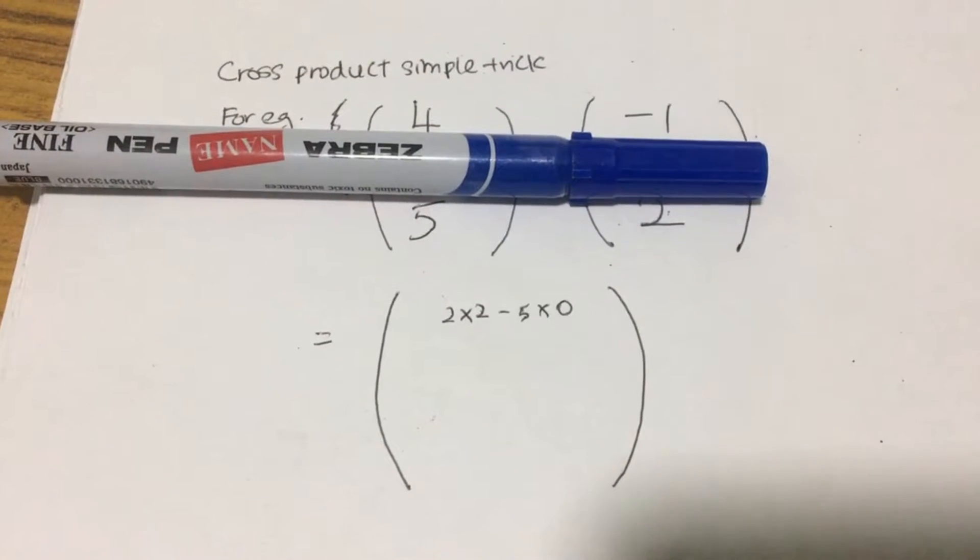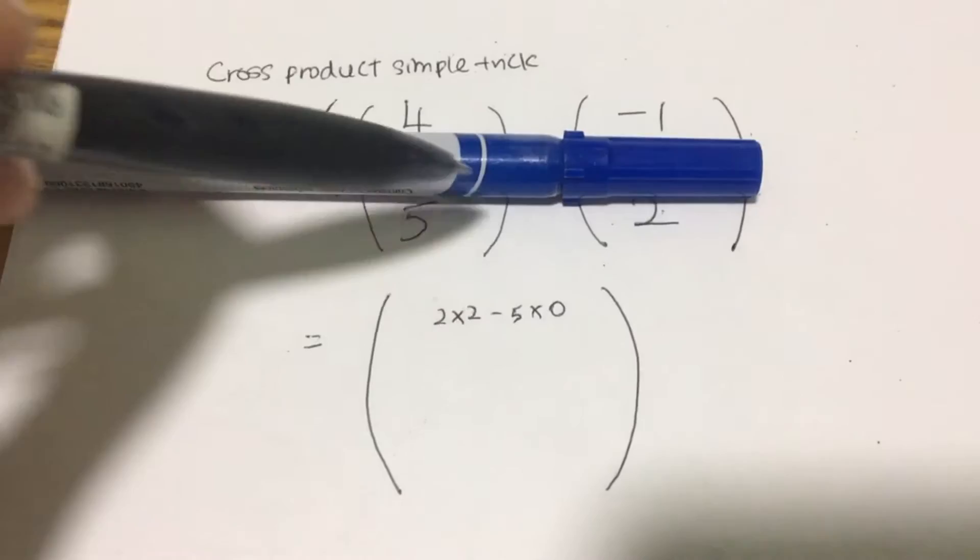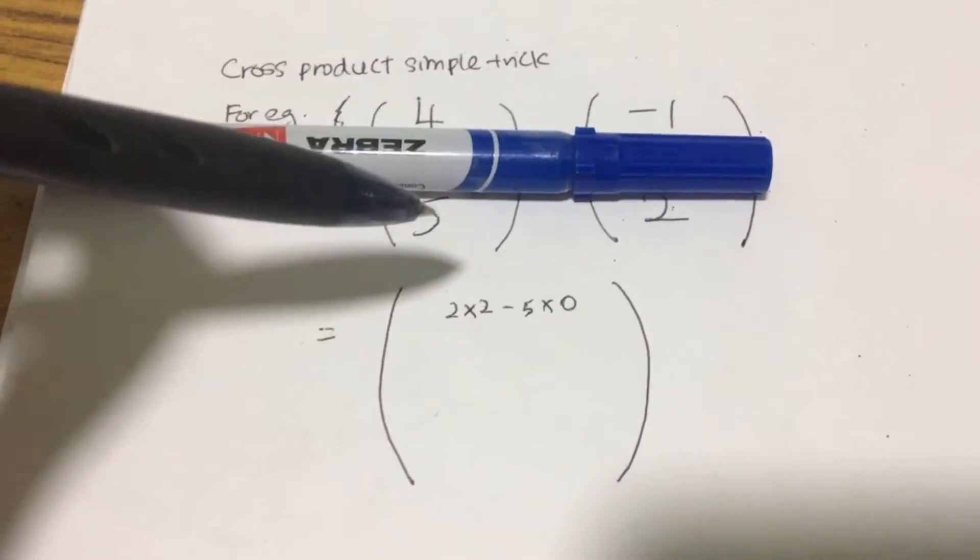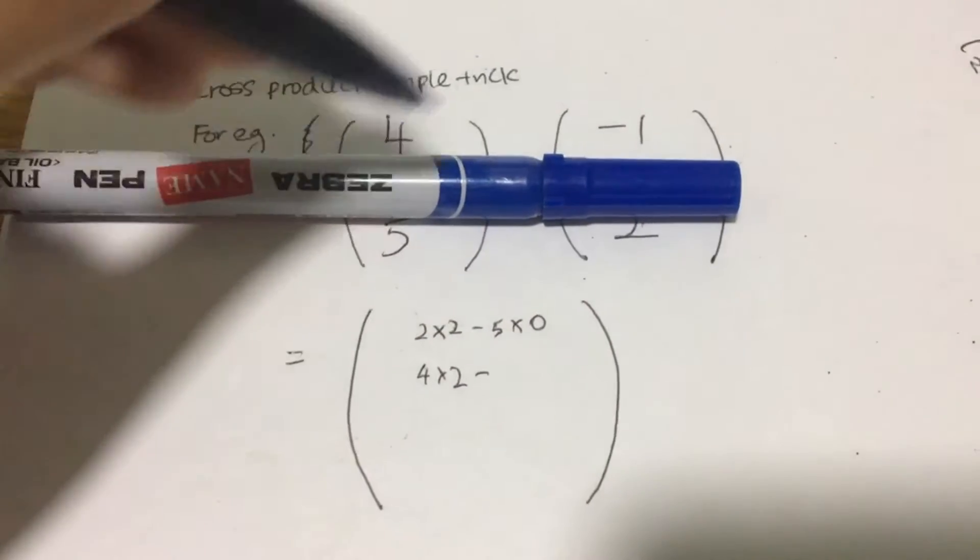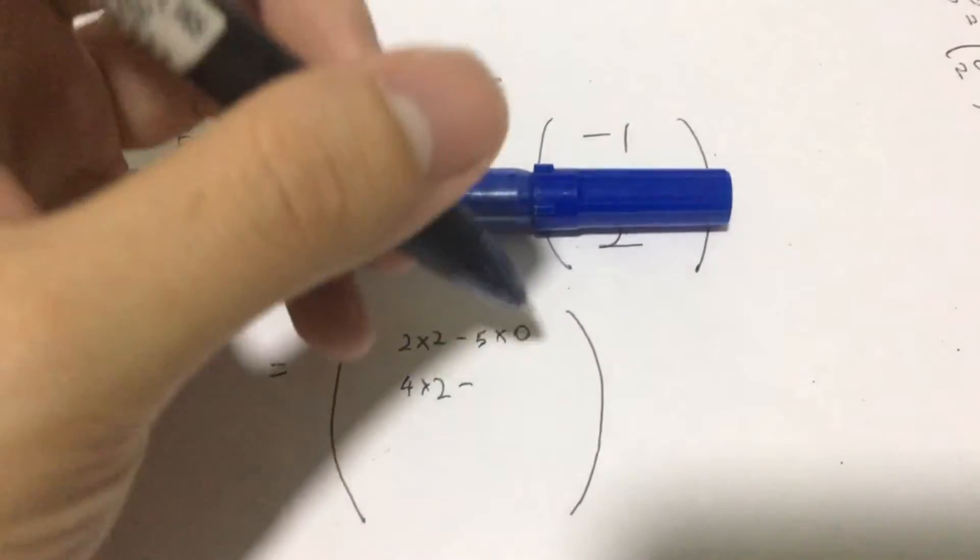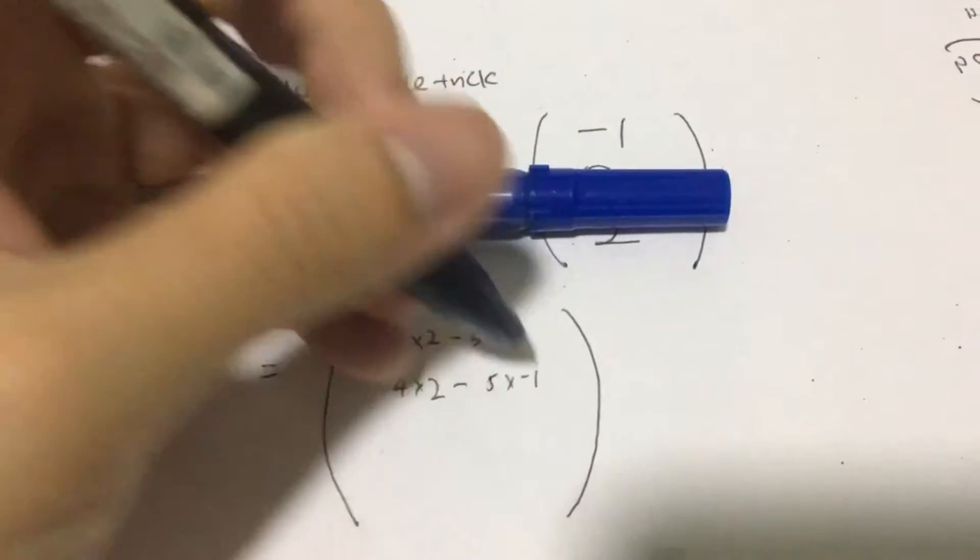The next thing I will do is to cover the second row and do a cross product. So I will take 4 times 2 minus 5 times negative 1.